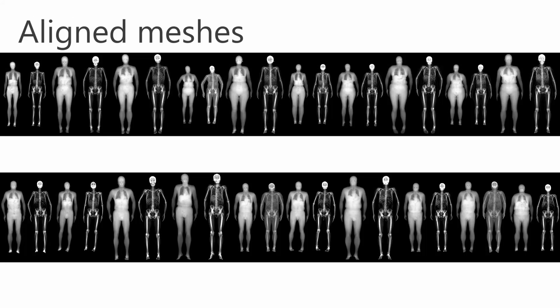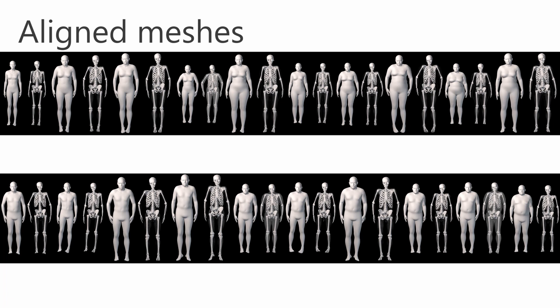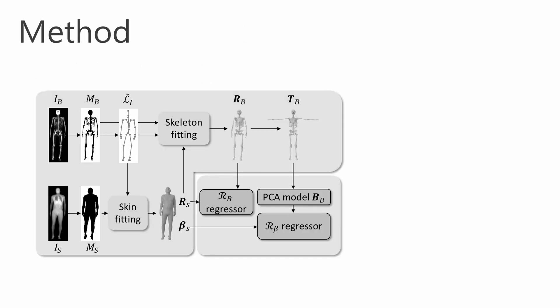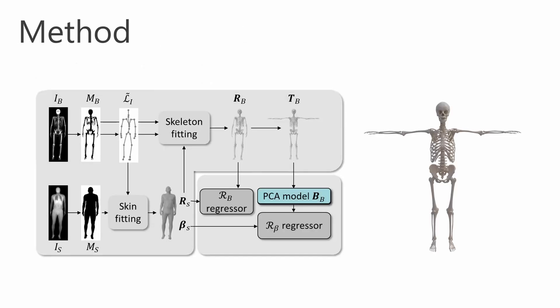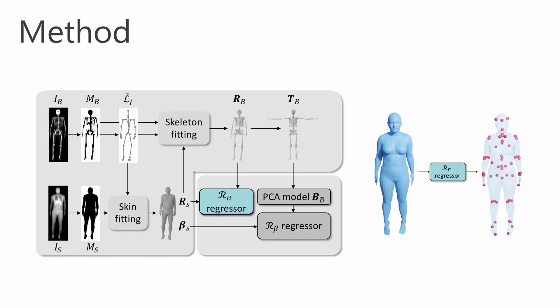Those alignments constitute a dataset of paired body and skeleton meshes that we use to learn a mapping from the body to the bones. From that data, we learned for each gender a PCA model of the skeleton, the correlation between the body shape and the skeleton shape, and the correlation between the body shape and the bone locations.